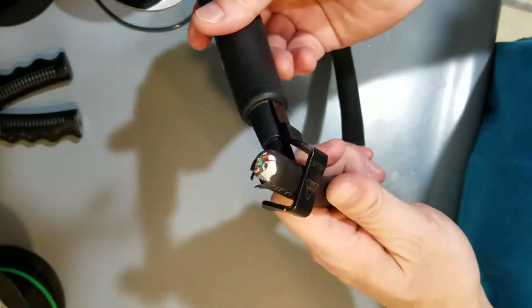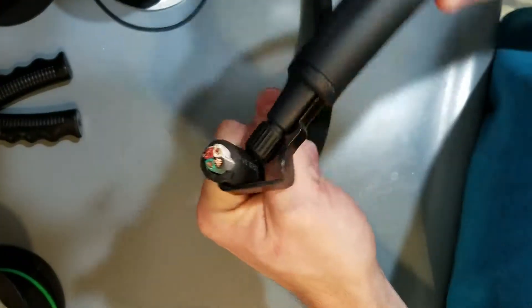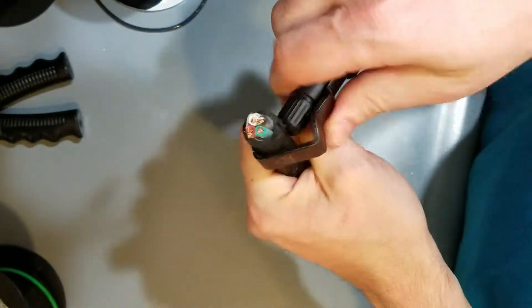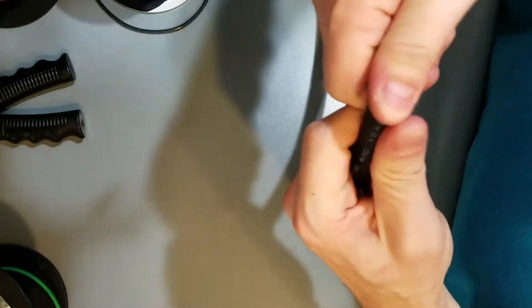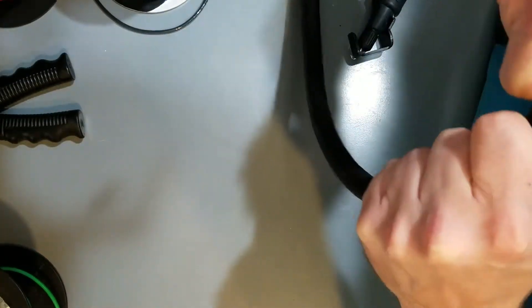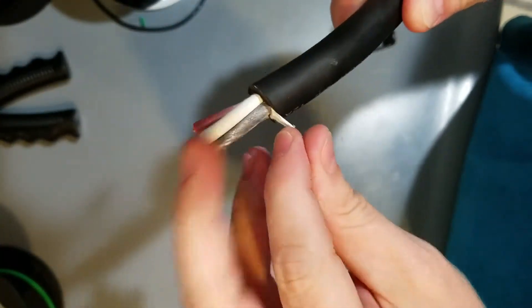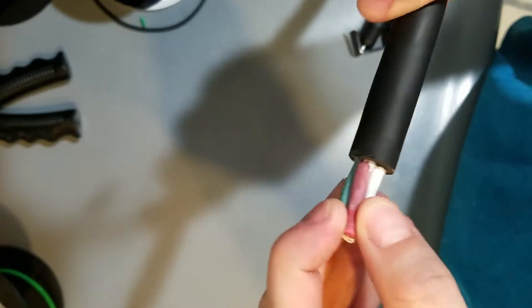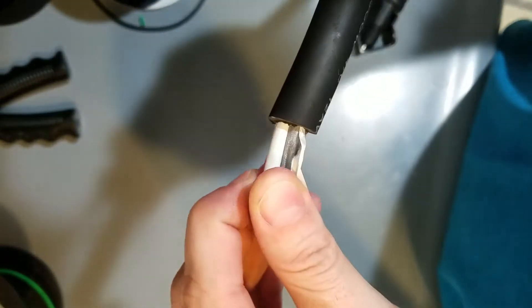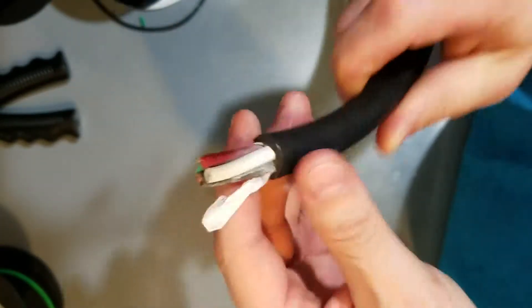But with this Waytek stripper, all you do is go around like that, pull, and perfect. Haven't nicked any of the insulation on the inside. And now you're good to go.